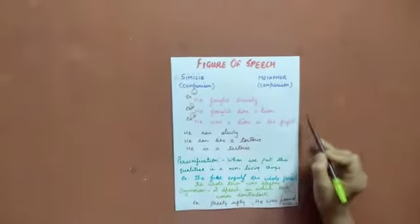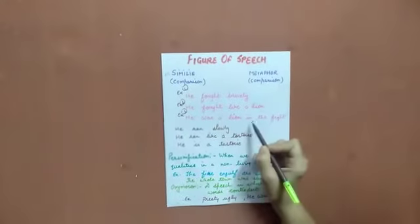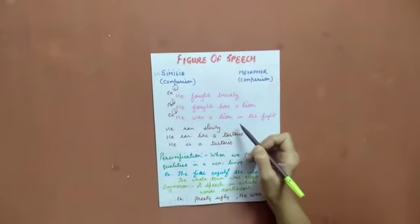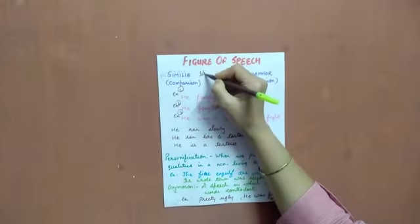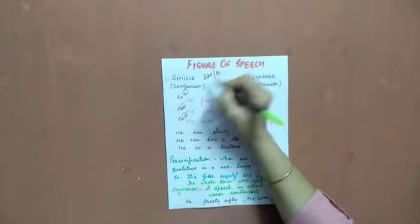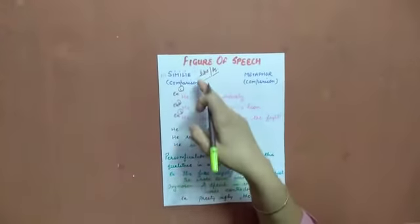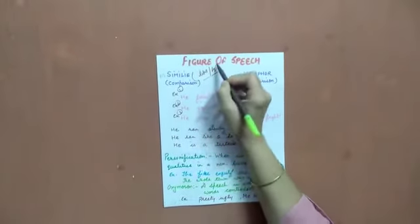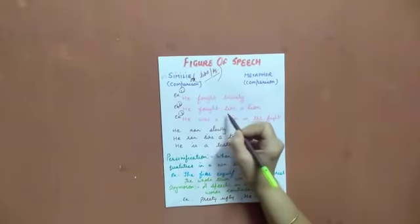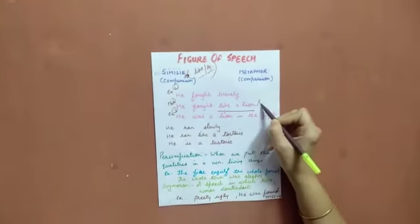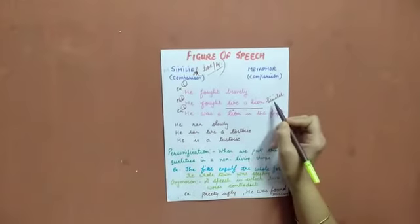This is the direct comparison. A person cannot be a lion. We all know it very well. But what we are doing, if we use like and as, like and as means his tarha. If we use like and as, it denotes simile. When there is like and as, there is a simile. This sentence contains a simile.